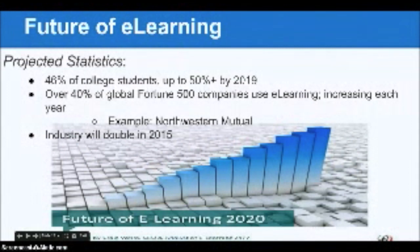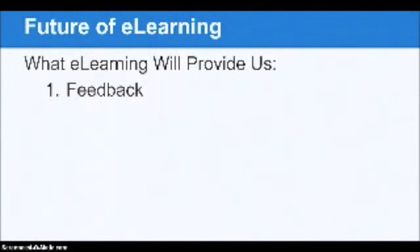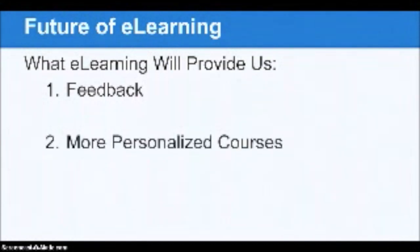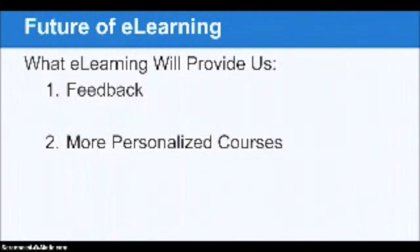Now we're going to talk about a few things that e-learning will allow us to do in the future. First, feedback. Most modern technology gives teachers, managers, students, and employees instant and timely feedback, which can be used to pinpoint where the learner and the course itself need to improve. Second, more personalized courses. Teachers and managers can now see how individuals are learning best, which will result in more personalized and engaging courses. Modules can be custom-tailored to fit individual needs of the learner. For example, with Northwestern Mutual's securities exam, questions you miss on chapter quizzes are funneled into flashcards you can use right before taking the exam.